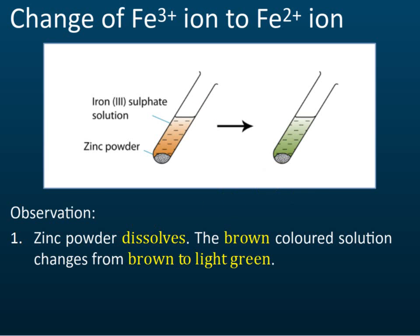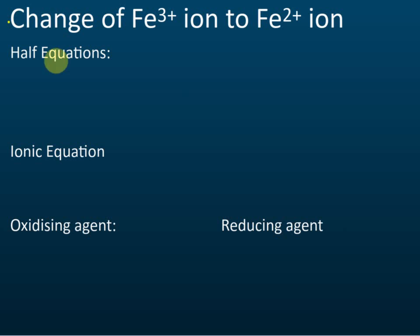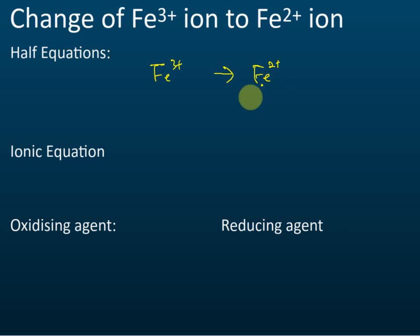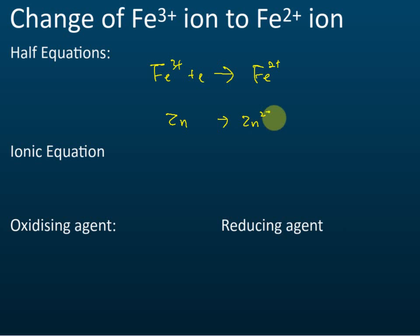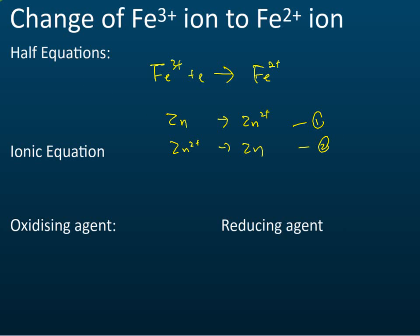Now let's look at the half equations. The half equation is from iron 3 to iron 2 ions. To balance it, we add electrons to the left-hand side. Then for zinc: zinc to zinc ion, or zinc ion to zinc — equation one or equation two. Which one is the correct half equation?